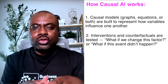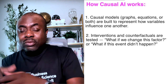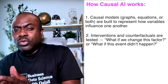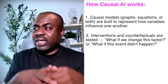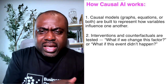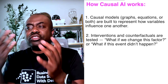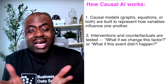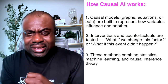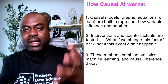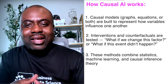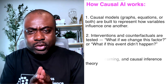Second, you test interventions and what we call counterfactuals. You test interventions in the model to see what happens, or you test things that may be counter to what the model is saying — for example, what if we change one variable, what will happen to the other, or what if this event didn't happen? Generally, causal AI models use statistics, machine learning, and causal inference theory to arrive at an understanding of causal impact.